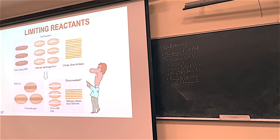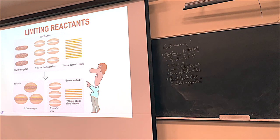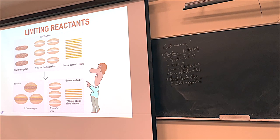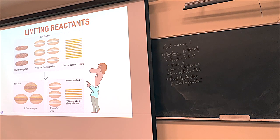To explain this in a bit more detail, I'll use a cheesy example—literally—about hamburgers. The ultimate burger means one hamburger patty, two slices of cheese, and a bun. You and your friends come home after a long day of chemistry, super hungry, and you want to make the ultimate burger. So you look in the fridge.